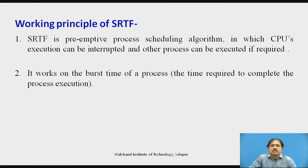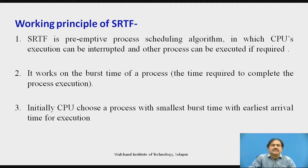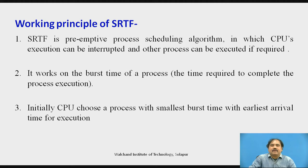This algorithm uses burst time as its selection criterion — it selects the process with the smallest burst time for execution. Initially, the OS will choose the process with the smallest burst time available at that instant. That process is then executed for only one time unit. At the end of every time unit, all processes available in the ready queue are reconsidered, and the one requiring the least burst time is chosen next.